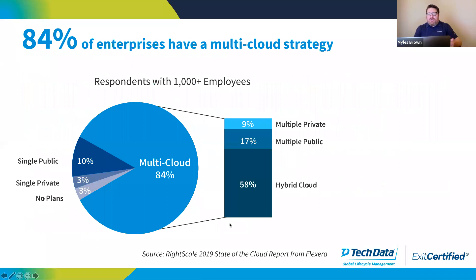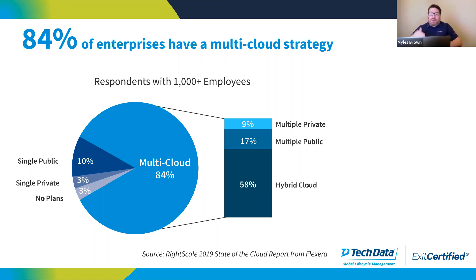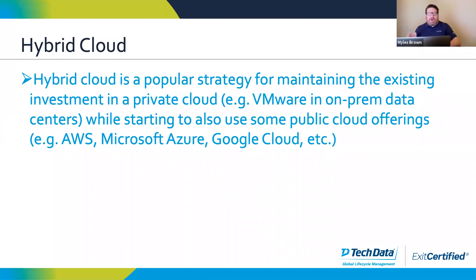Just last year, RightScale — which is now Flexera — polled quite a few cloud developers and architects, and found that 84% of enterprises with over 1,000 employees have a multi-cloud strategy. When they say multi-cloud, they include hybrid, and that's the bulk of it. The idea that you're going to have multiple public clouds is not that common yet, but when you look at what people are considering, it is very, very popular. Let's talk a little bit about hybrid first, and then we'll concentrate the rest of the webinar on multi-cloud.